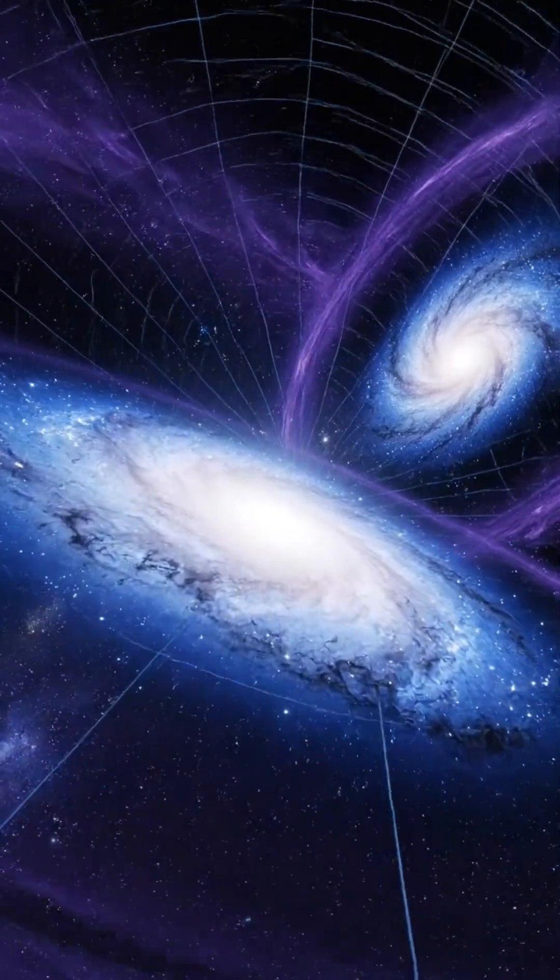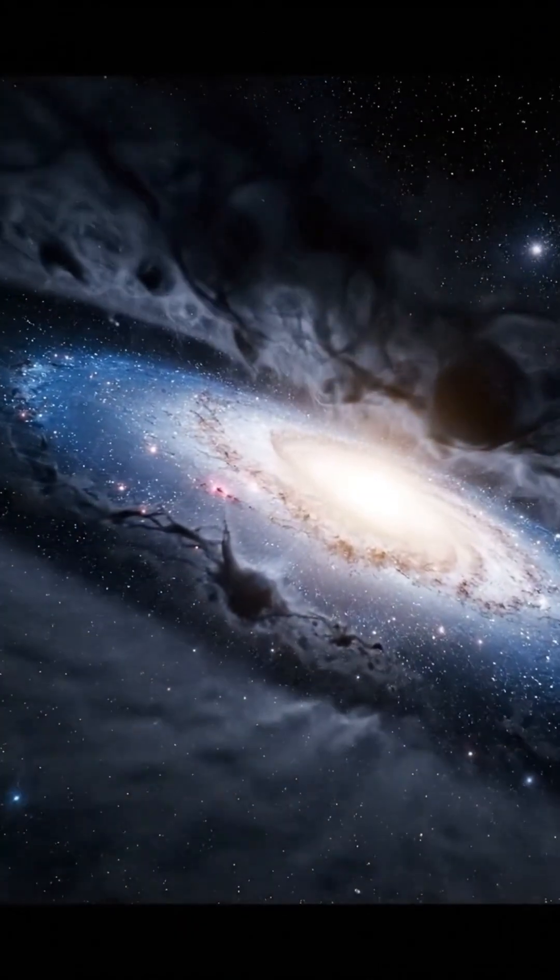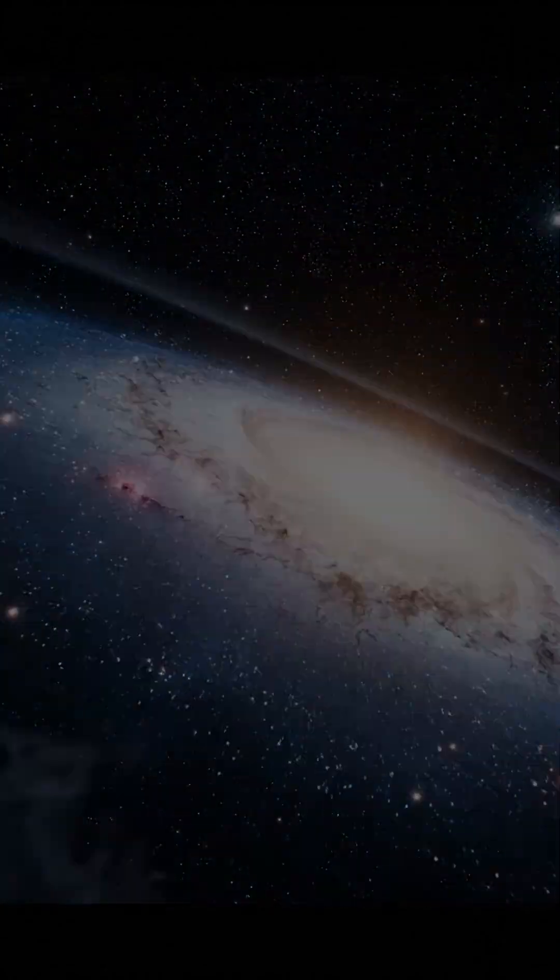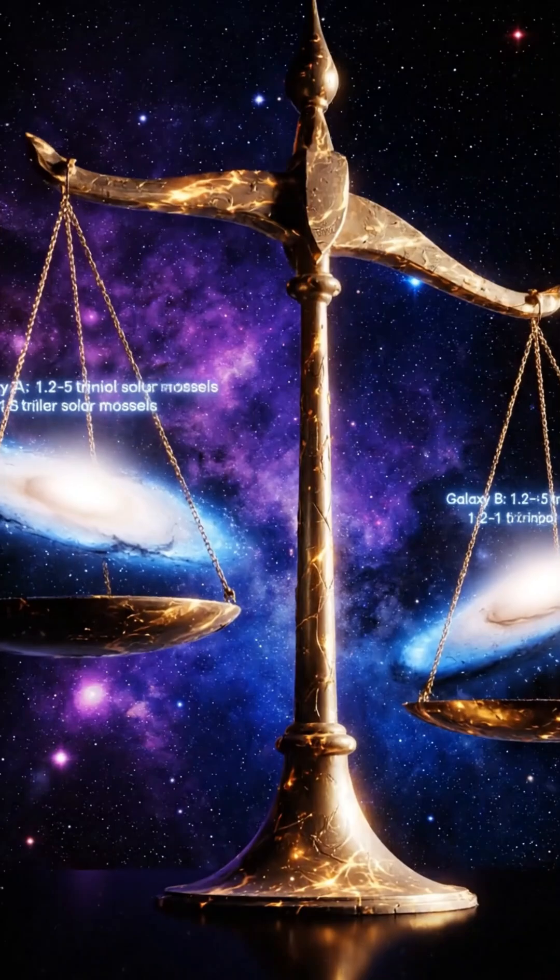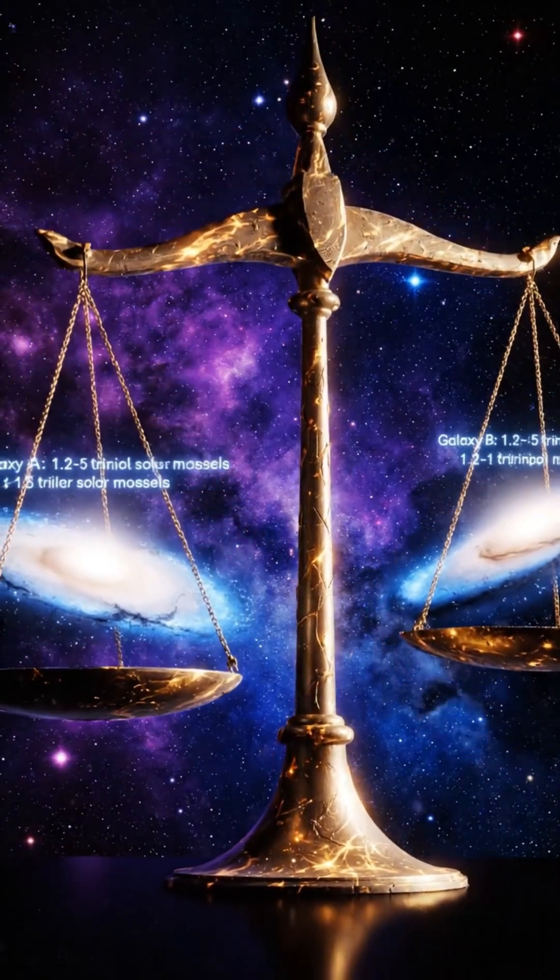Recent studies using satellite data suggest the Milky Way might be denser and more muscular than previously thought. While Andromeda has more stars, the Milky Way may possess more dark matter, potentially making their total masses nearly equal—around 1.2 to 1.5 trillion solar masses.